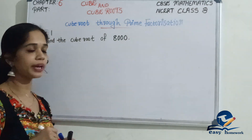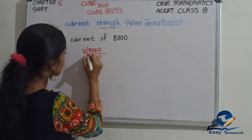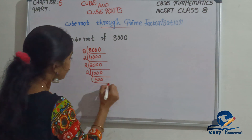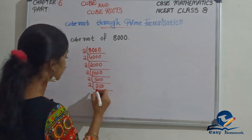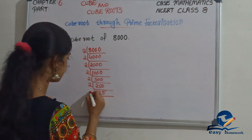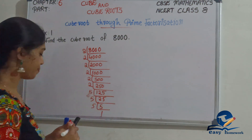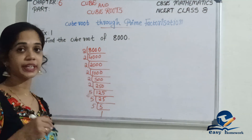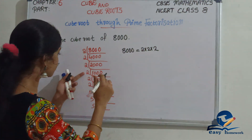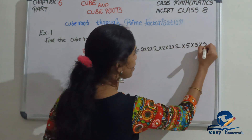The next example: find the cube root of 8,000. What should we do? Prime factorization. 8,000 in prime factorization: 2 times 4,000, then 2 times 2,000, then 1,000, then 500, then 250, then 125, then 5 times 25, then 5 times 5.